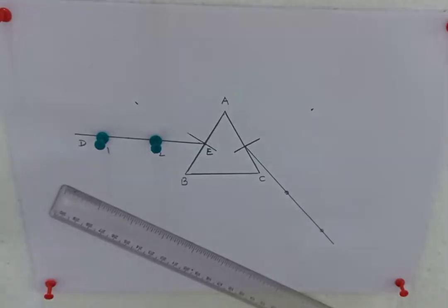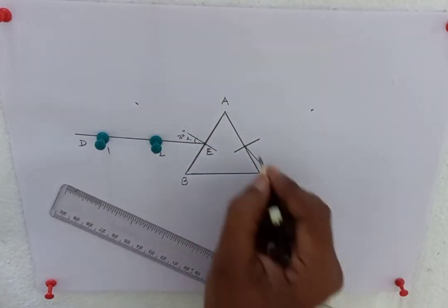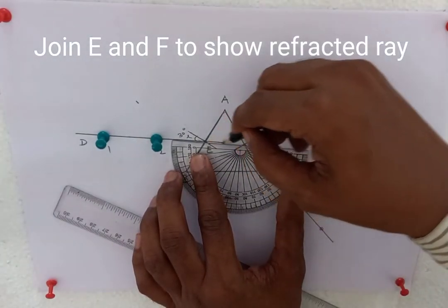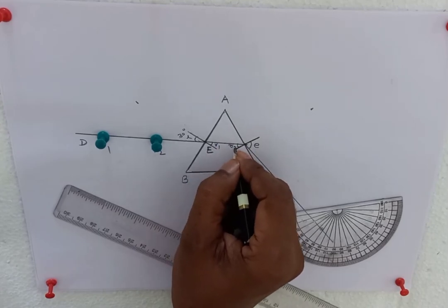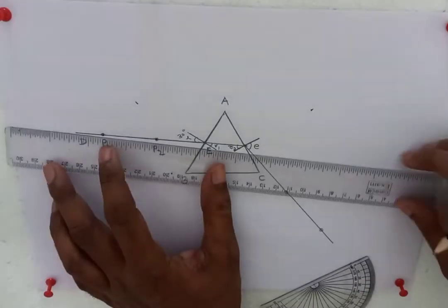Draw normal N on surface AC. Mention angle of incidence I equals 30. Angle of emergence E. Join E and F to show refracted ray. R1 and R2 is the refracted angle, the refracting angle.